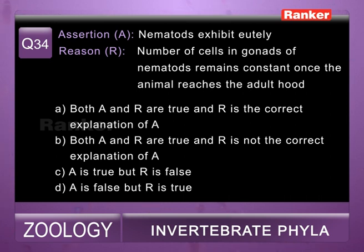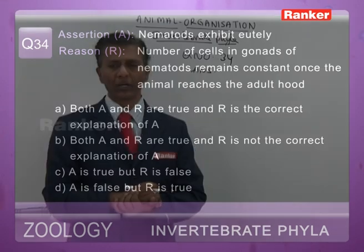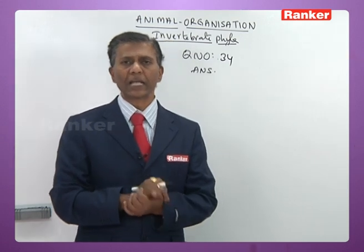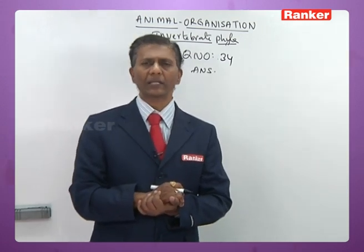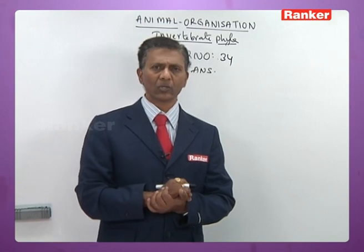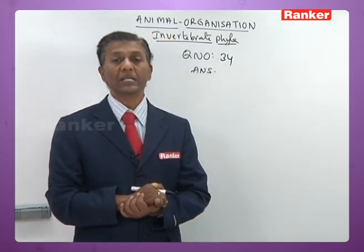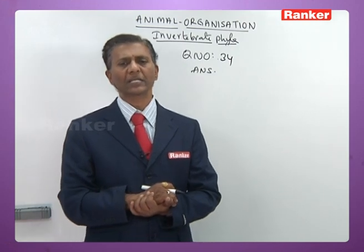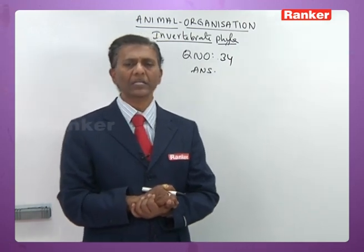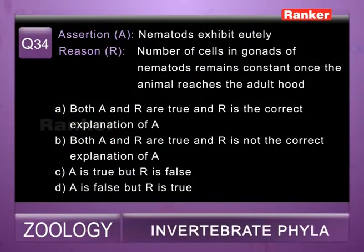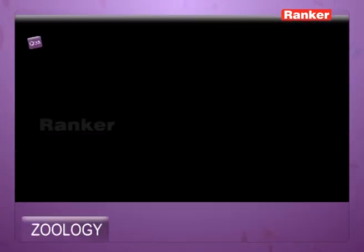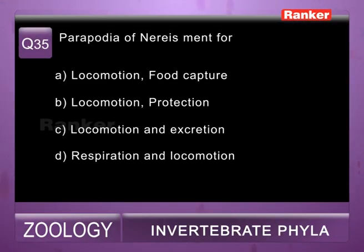Question thirty-four — assertion: nematodes exhibit eutely (correct). Reason: the number of cells in gonads of nematodes remains constant once animal reaches adulthood (wrong — in all organs except gonads the number of cells remains constant). Assertion is true but reason is false. So thirty-fourth question correct answer is c.